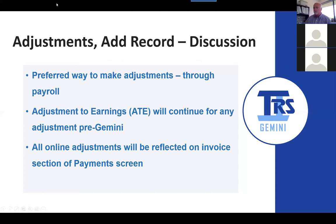Question: What if federal funds are retro to previous pay dates already paid? For federal funds, you do not need to do an adjustment if it ties to a previous pay period — we just need to make sure it's reported in the correct fiscal year. If you are paying something for federal funds in one pay period that applies to another pay period, just report it in the pay period in which you're paying it. However, if it is for the previous fiscal year and something you missed, that would have to be an adjustment.